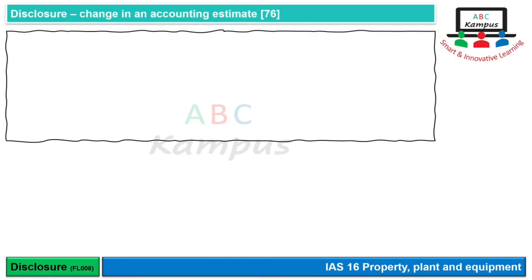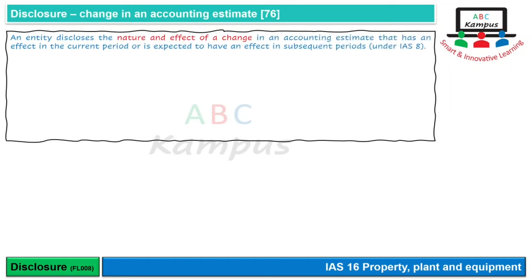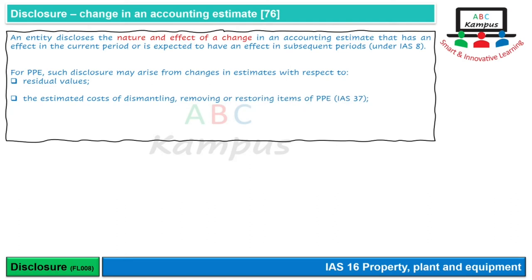Kuch disclosures ki requirement change in accounting estimate ki base par hoti hai, relevant standard IAS 8 ke mutabiq — entity discloses nature and effect of a change in accounting estimate. Property, plant and equipment mein jo relevant estimates use hote hain wo hain: residual value (estimated amount, change hone par depreciation par fark padta hai), cost of dismantling/removing/restoring (relevant IAS 37), aur useful life review ya depreciation method change. In sab ke disclosures dene hote hain.